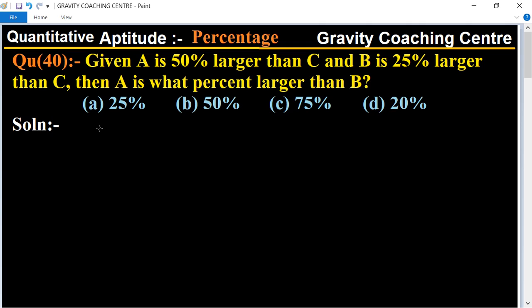A is 50 percent larger than C, so according to the question, A equals 150 upon 100 of C.